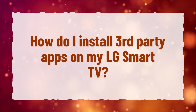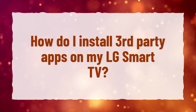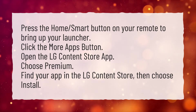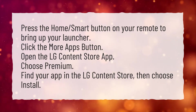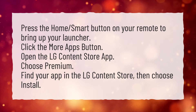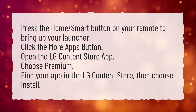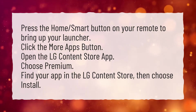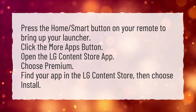How do I install third-party apps on my LG Smart TV? Press the Home Smart button on your remote to bring up your launcher. Click the More Apps button. Open the LG Content Store app. Choose Premium. Find your app in the LG Content Store, then choose Install.